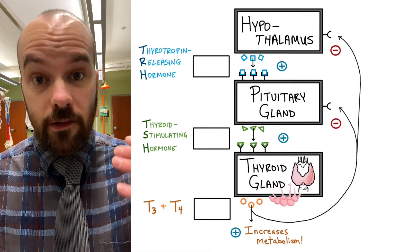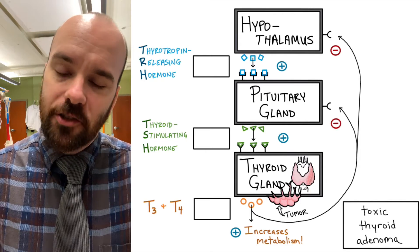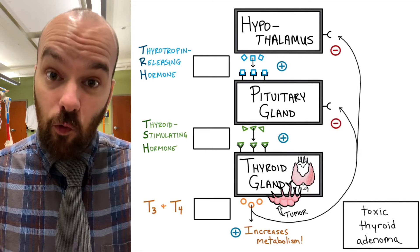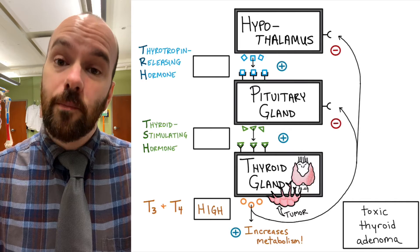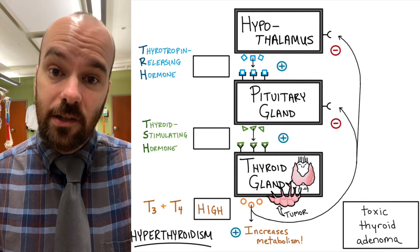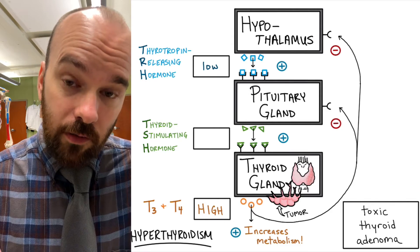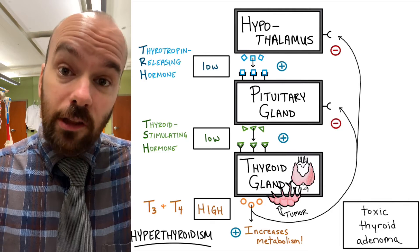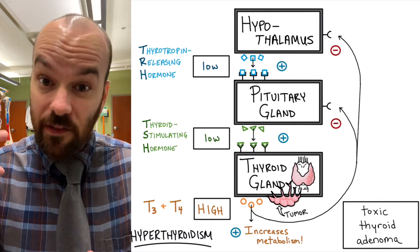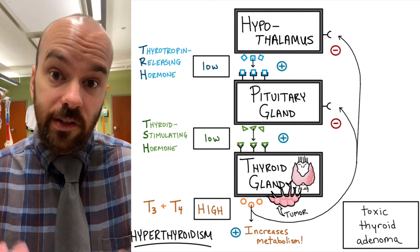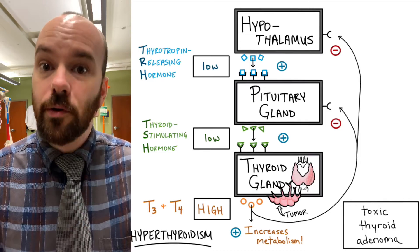For our second example, we're going to look at a tumor on the thyroid gland, often called a toxic thyroid adenoma. An adenoma is a non-cancerous tumor, but in this case it causes an overproduction of T3 and T4. With T3 and T4 levels being high, the patient will experience hyperthyroidism, and that excess T3 and T4 is going to inhibit the hypothalamus and the pituitary gland, making TRH and TSH levels low. Normally low TSH would decrease T3 and T4 production, but that doesn't happen here because the tumor is out of control, overproducing T3 and T4 even with less TSH than normal.